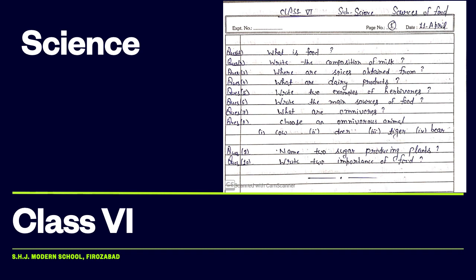The two main sources of food are plants and animals. Plants and animals are the two major sources of food that provide us a different variety of food which we eat in daily life.